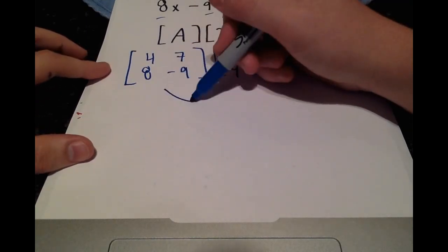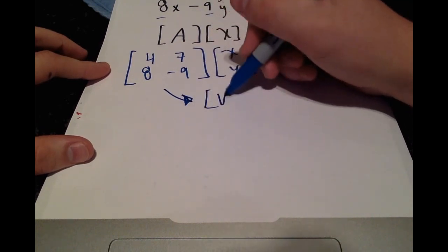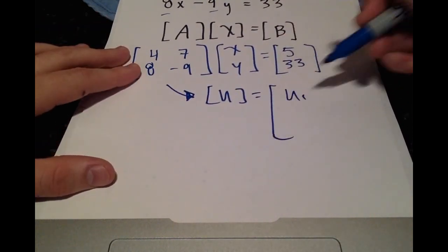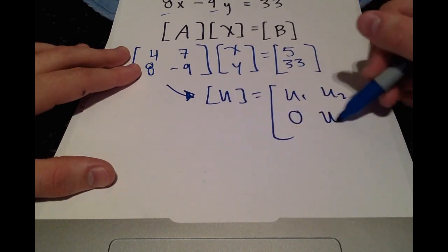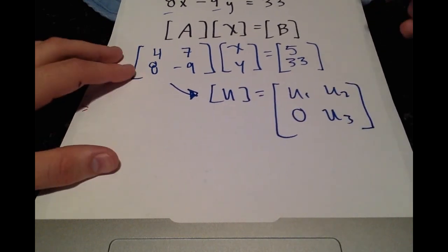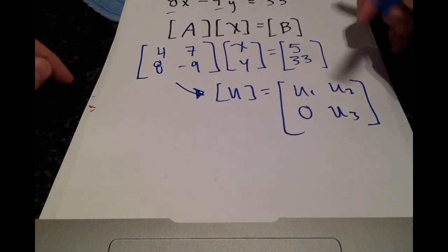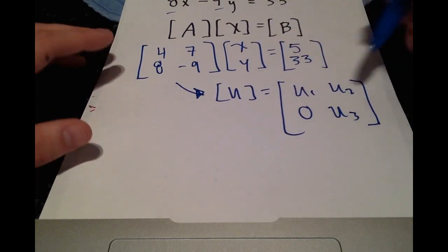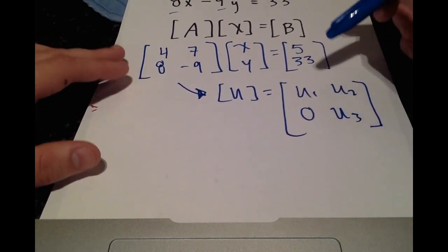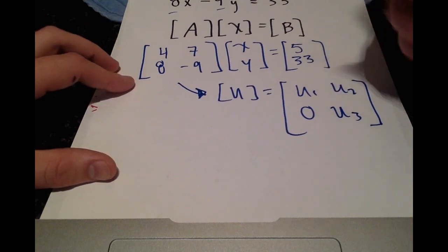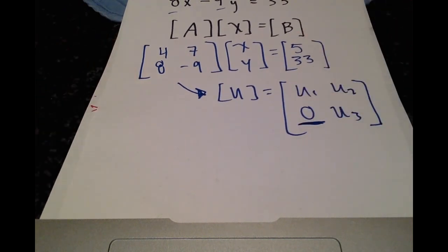So now we want to use A to get U, which has the form U1, U2, 0, U3. Which, it already looks pretty similar. If you ask me, we have 4, 7, 8, negative 9. So we want to get rid of that 8 and in its place get this 0 term. So what is the easiest way to do that?